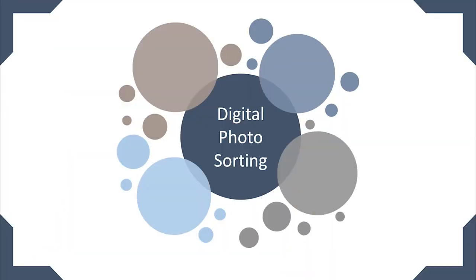Apps will only get you so far and there may be a little bit of work that you have to do. Once you have all your photos in one place from all those sources such as phones, computers, hard drives, discs, USB sticks to name just a few, there are four main digital photo organizing steps that apps can help you with. The four main steps are: step one, get rid of duplicates; step two, sort them into folders; step three, file redating; and step four, renaming all the photos to match the folders.